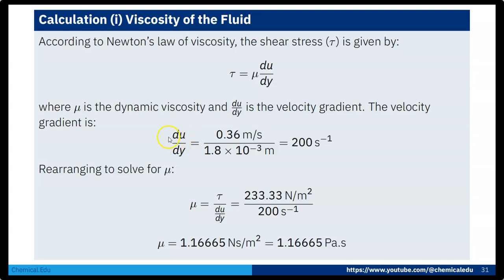Now we have to calculate the viscosity. Viscosity μ = τ / (du/dy). τ = 233.33 N/m² and du/dy = 200 s⁻¹. So viscosity μ = 233.33 / 200 = 1.1665 N·s/m², which is the same as 1.1665 pascal seconds.